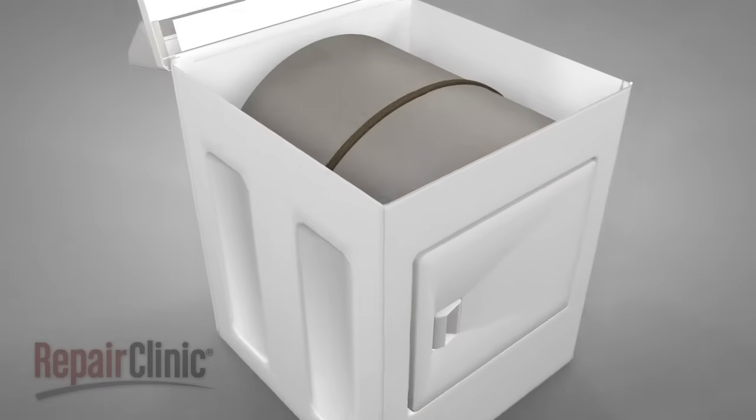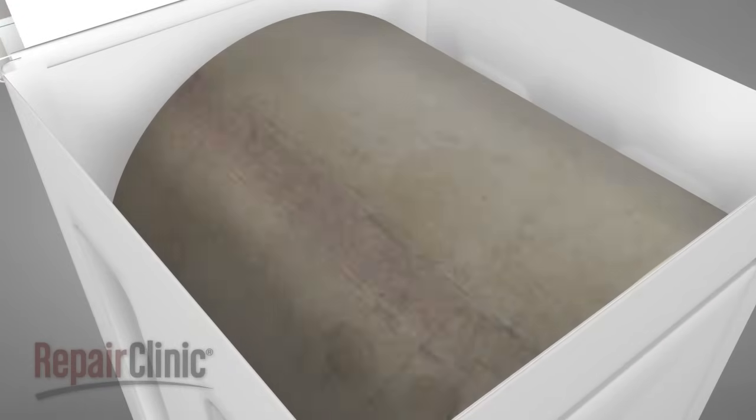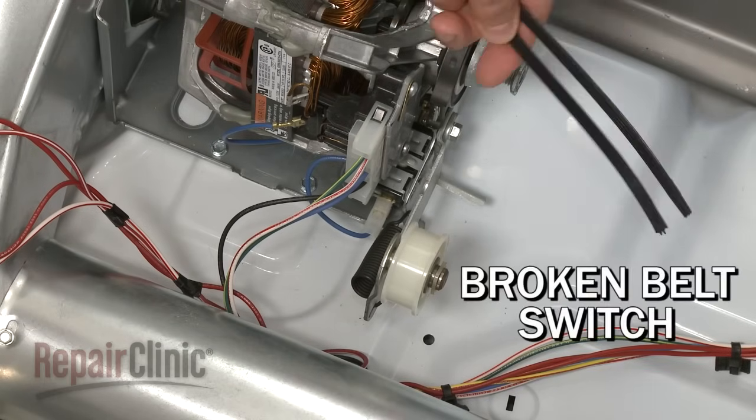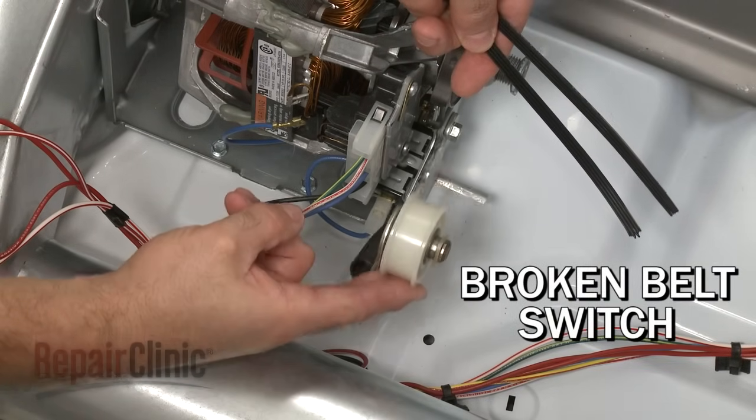When the belt breaks, you may hear the motor running, but the drum will not rotate. On some models, a broken belt will activate a switch that prevents the motor from running.